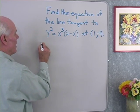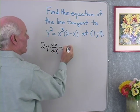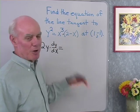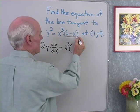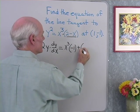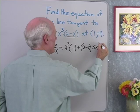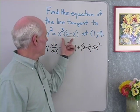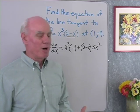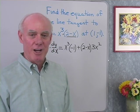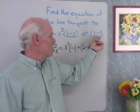Differentiating left to right, I write 2y times dy/dx equals — here's the product rule. The first, x cubed, times the derivative of the second, which is negative 1, plus the second, 2 minus x, times the derivative of the first, which is 3x squared. So using the product rule: first times the derivative of the second, plus the second times the derivative of the first. For the equation of the tangent line I just need the slope, so I don't need to simplify — I can substitute in x equals 1 and y equals negative 1.